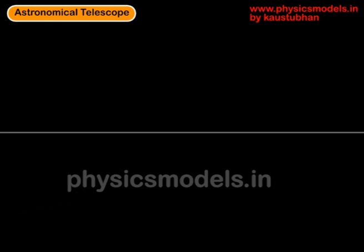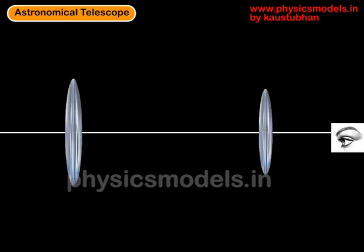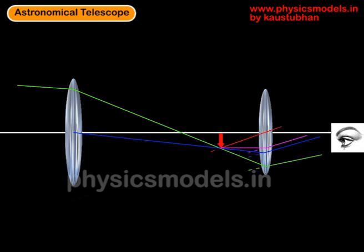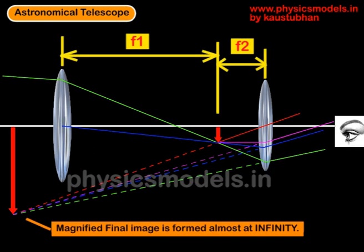Once the intermediate image has been formed, the next job of the ray diagram is to show us how the final image is formed. The whole purpose of the telescope is to get a large magnified final image. The rays coming out from the eyepiece are almost parallel, and therefore projecting them back using a dotted line you get a large magnified image which is formed almost at infinity. The focal length f1 and the focal length f2 fall on a focal plane where the inverted image has been formed — that is very important.